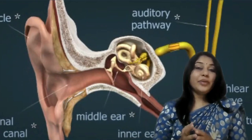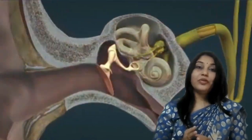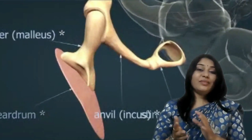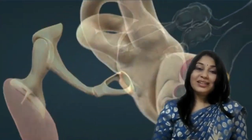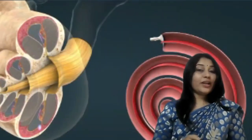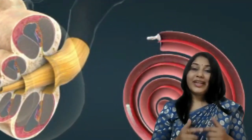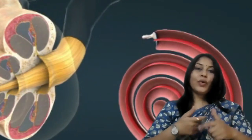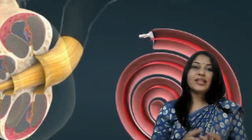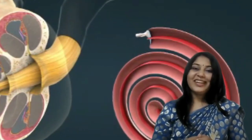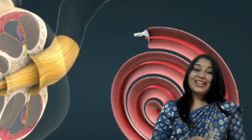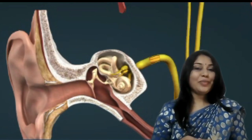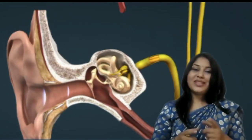Then we have the middle ear, which contains the eardrum and ear bones. The last part is the inner ear, which contains the cochlea and some auditory canals. The cochlea absorbs the sound and converts it into electrical signals, and finally the auditory nerves carry the electrical signals to our brain so we can feel the sound.